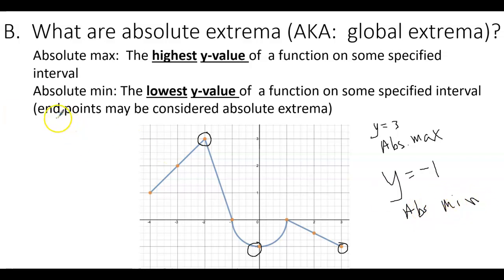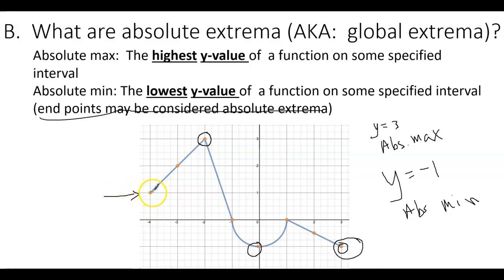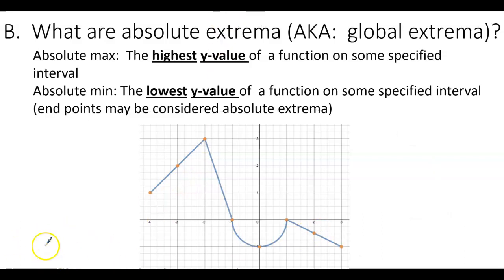Endpoints can be considered absolute extrema — this one here is an endpoint and it's the absolute min. But an endpoint doesn't have to be an absolute extrema; this other endpoint is not the highest or lowest point. The reason I emphasize that is because for the next thing we discuss — relative extrema — endpoints are not allowed to be considered. So absolute extrema are the highest and lowest y values.